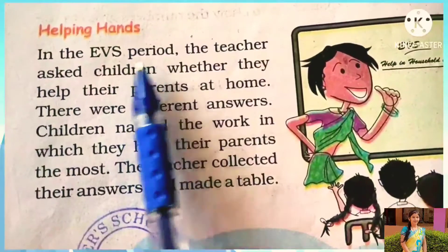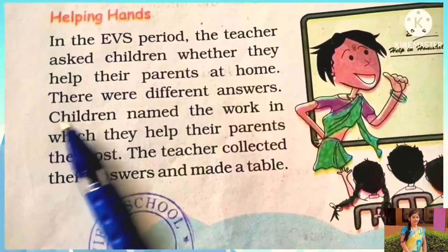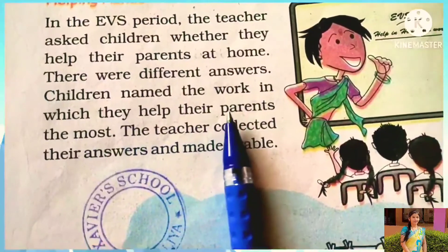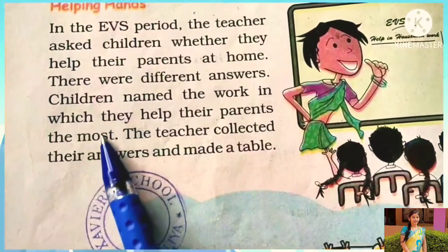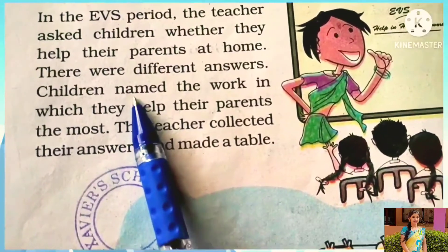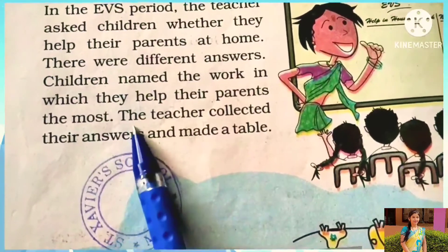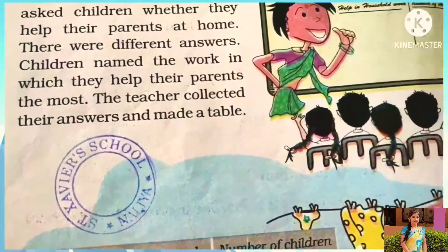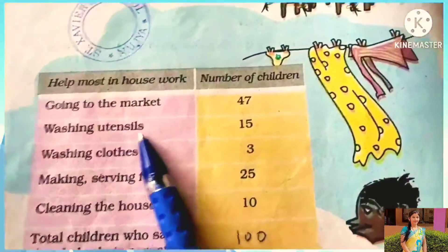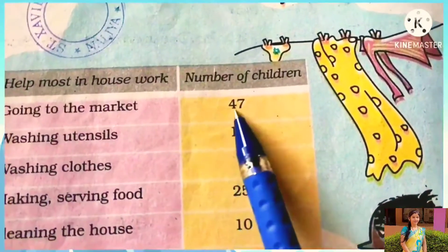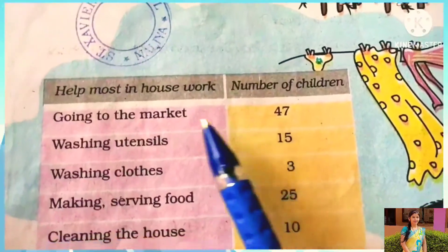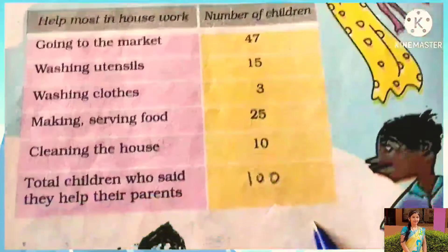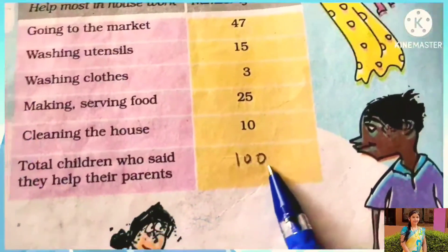Helping Hands. In the EVS period, the teacher asked children whether they help their parents at home. There were different answers — children named the work in which they help their parents the most. EVS ke period mein teacher ne bacchon se poocha ki woh apne ghar mein parents ke kin kamon mein help karte hain. Going to the market: 47 students. Washing utensils: 15. Washing clothes: 3.